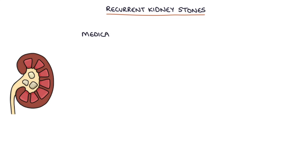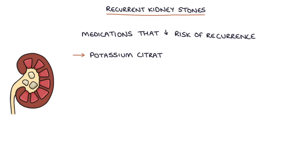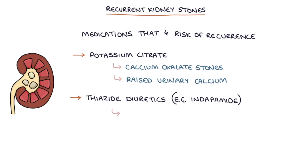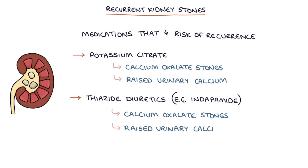Two medications may be used to reduce the risk of recurrence: potassium citrate, used in patients with calcium oxalate stones and raised urinary calcium, and thiazide diuretics — for example indapamide — also used in patients with calcium oxalate stones and raised urinary calcium.